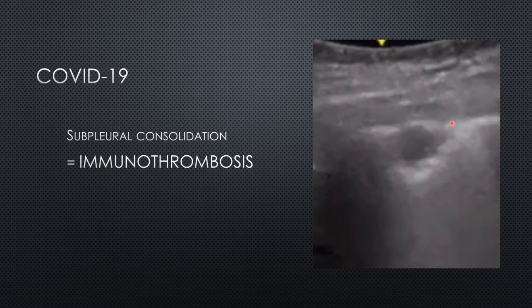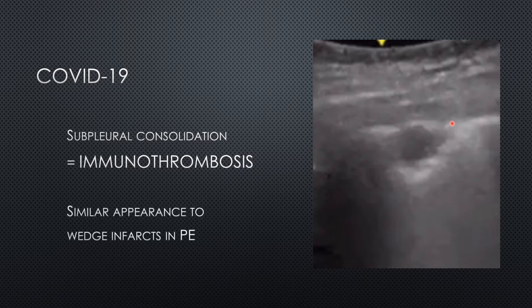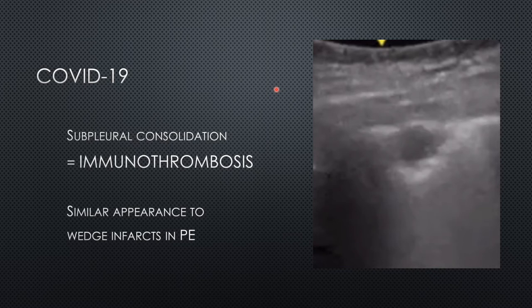In COVID-19, we see subpleural consolidations that look very similar to the wedge infarcts seen in PE. The latest research suggests these are actually a form of immunothrombosis — thrombosis arising in situ rather than embolizing from a distant DVT source. How can you tell them apart? Well, you can't really, but associated signs may help. Confluent B-lines, pleural line irregularity, and patchy bilateral distribution would be classic of COVID pneumonitis. However, we know COVID causes a pro-thrombotic state, so if in doubt, order a CTPA.